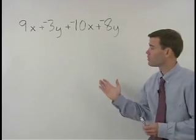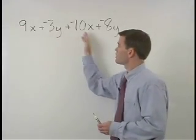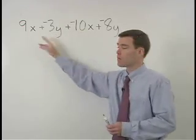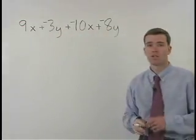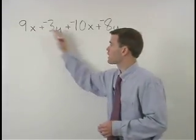And in this problem, we have a pair of like terms in our x terms and we have a pair of like terms in our y terms. So let's start by combining our x terms.